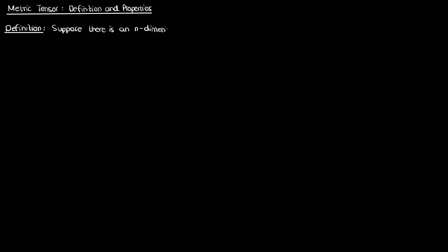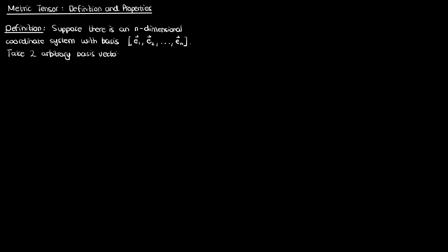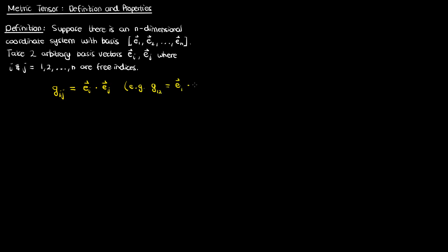Suppose I have a coordinate system in n dimensions with basis vectors given by e1, e2, all the way to e sub n. In general, if I select two basis vectors in this coordinate system I can write them as ei and ej, where both i and j are indices that run from 1 to n. Now the ij component of the metric tensor can be computed just by taking the dot product of basis vector ei and basis vector ej. So g sub ij is ei dot ej. It's that simple.